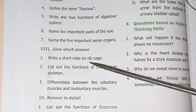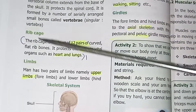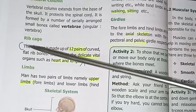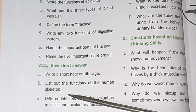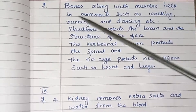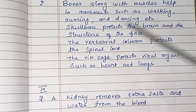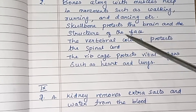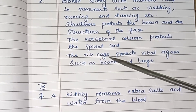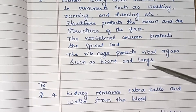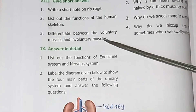Promoter 8: Give short answers. First: Write a short note on the rib cage — page number 70, the rib cage protects the heart and lungs. Second: List out the functions of the human skeleton — bones along with the muscles help in movements such as walking, running, and dancing. The skull bone protects the brain and the structure of the face. The vertebral column protects the spinal cord. The rib cage protects vital organs.